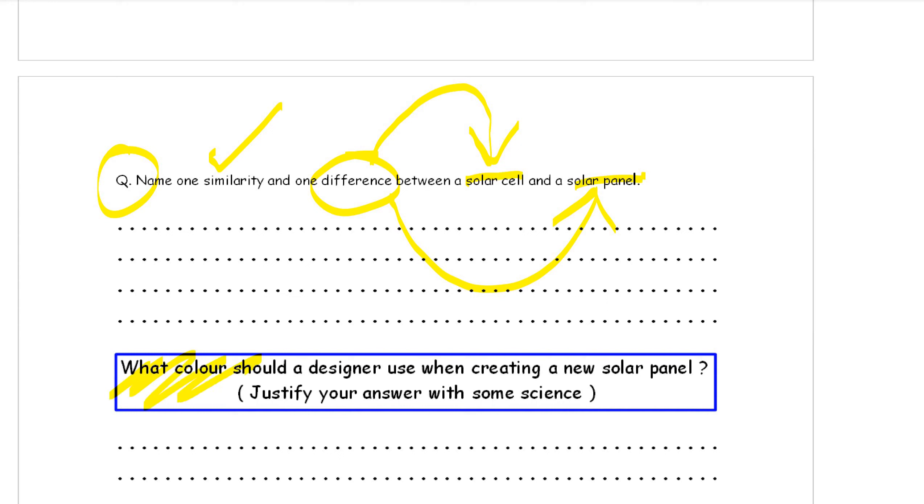And this question here, what color should a designer use when creating a new solar panel? Justify your answer with some science. Well, it's going to be black or very dark material because black is good at absorbing infrared heat radiation.